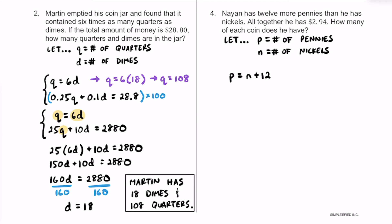We also know the total value of everything. Pennies are worth 1 cent each, so 0.01 times P. Plus nickels at 5 cents each, so 0.05 times N. The total value is $2.94. This is our system of equations.